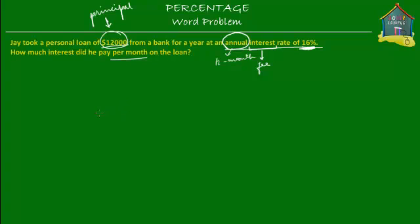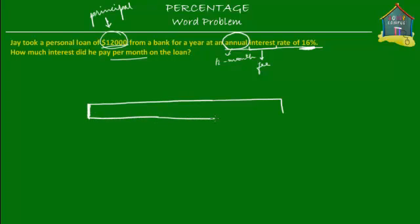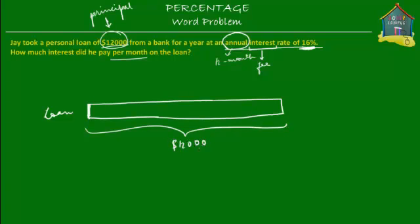Let's draw a model for this so it's even more clear to us. Let's draw a model for the principal, the amount of money that he borrowed from the bank. This we know is equal to $12,000, because that's how much he borrowed from the bank. So this is the personal loan of $12,000.